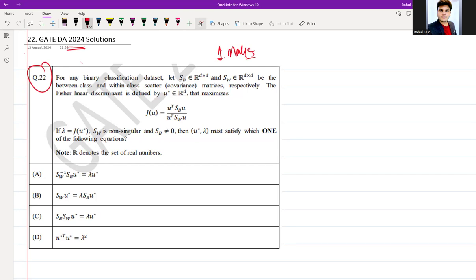Let Sv belongs to R^d × d and Sw belongs to R^d × d where these are the between-class and within-class scattered covariance matrices respectively. So this is between class and this is within class scattered covariance matrices.